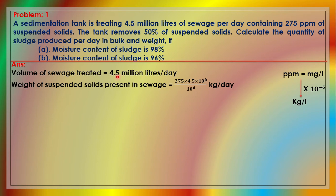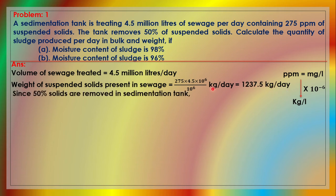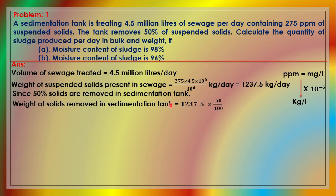The flow is 4.5 million liters per day, and the suspended solids concentration is 275 milligrams per liter. Converting: 4.5 × 10⁶ L/day × 275 mg/L ÷ 10⁶ = 1237.5 kg/day of suspended solids. Since 50% of solids are removed in the sedimentation tank, the mass of solids removed equals 50% of 1237.5, which is 618.75 kg/day.